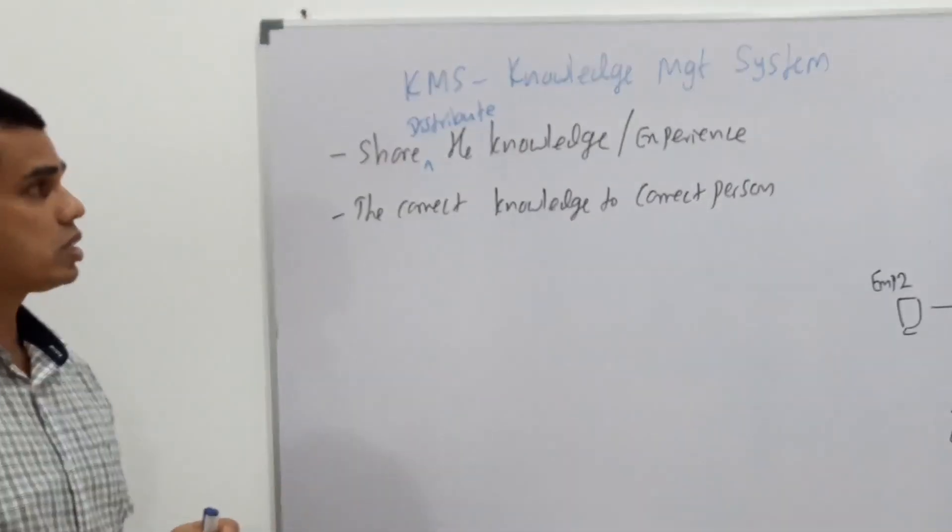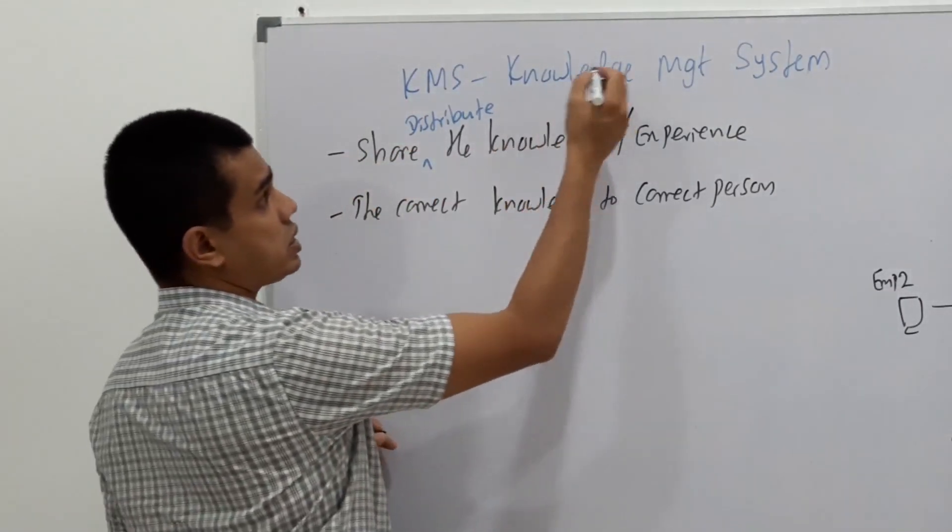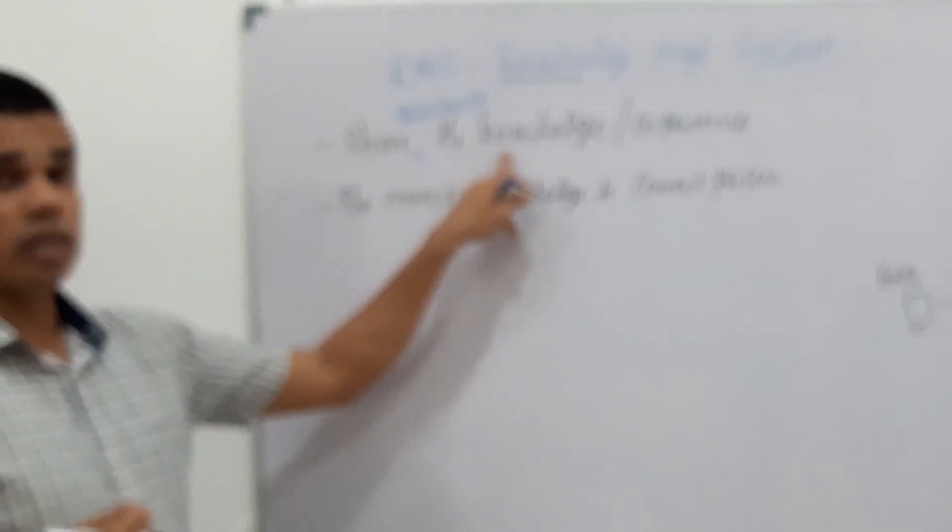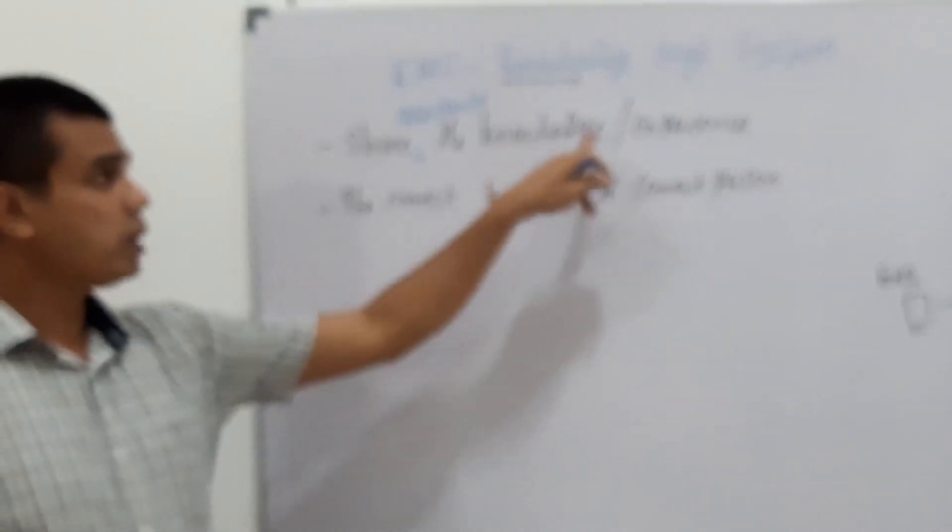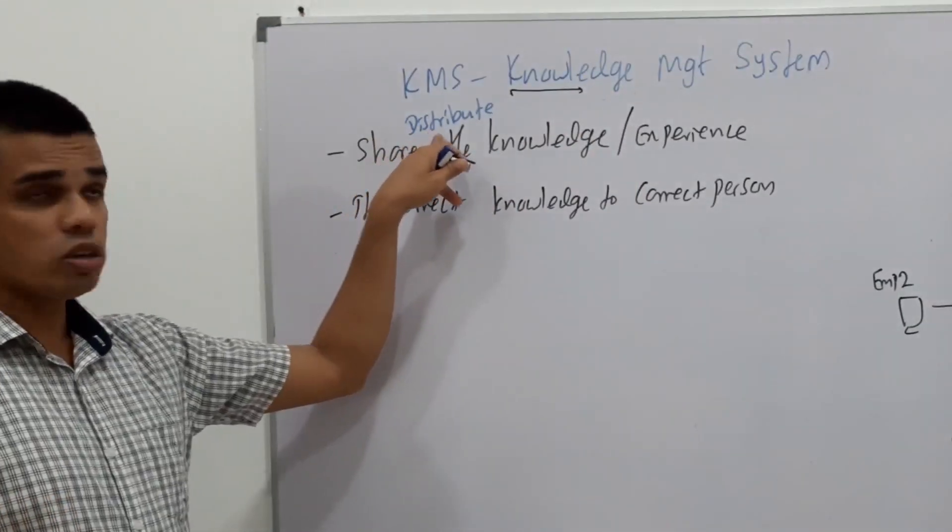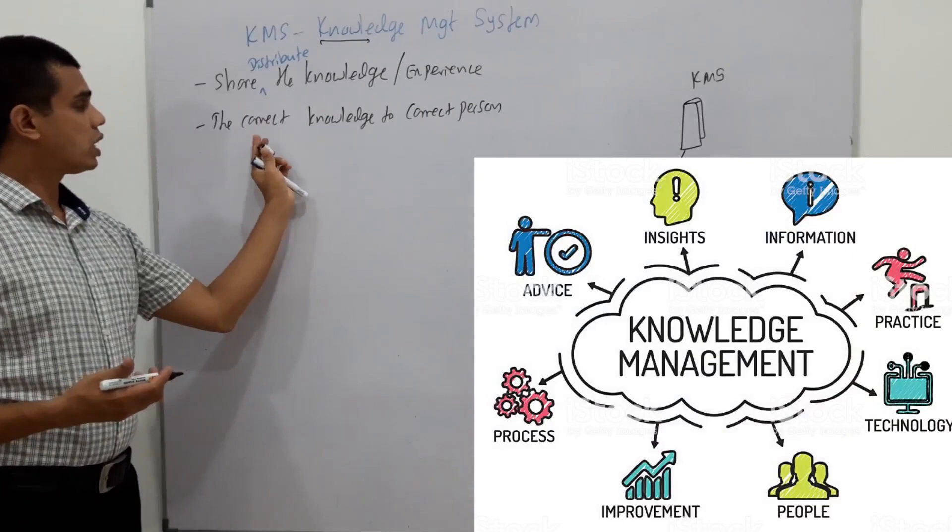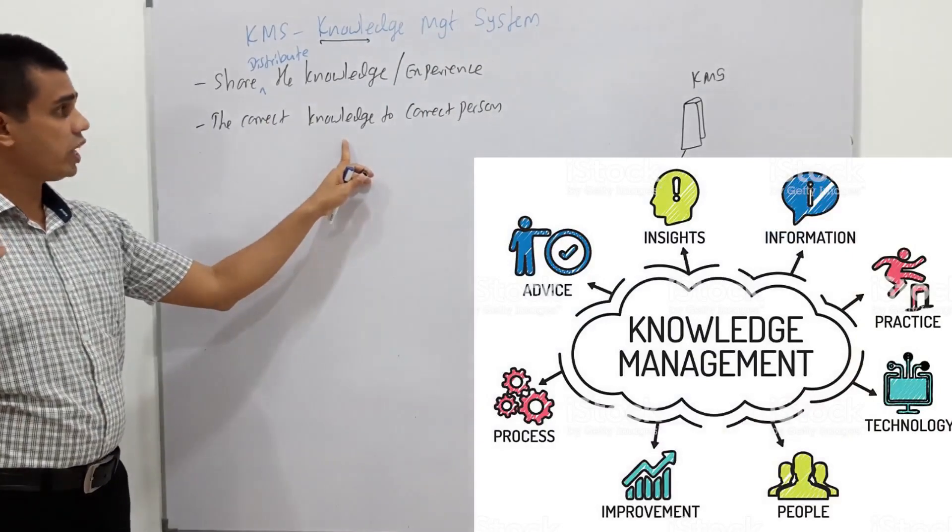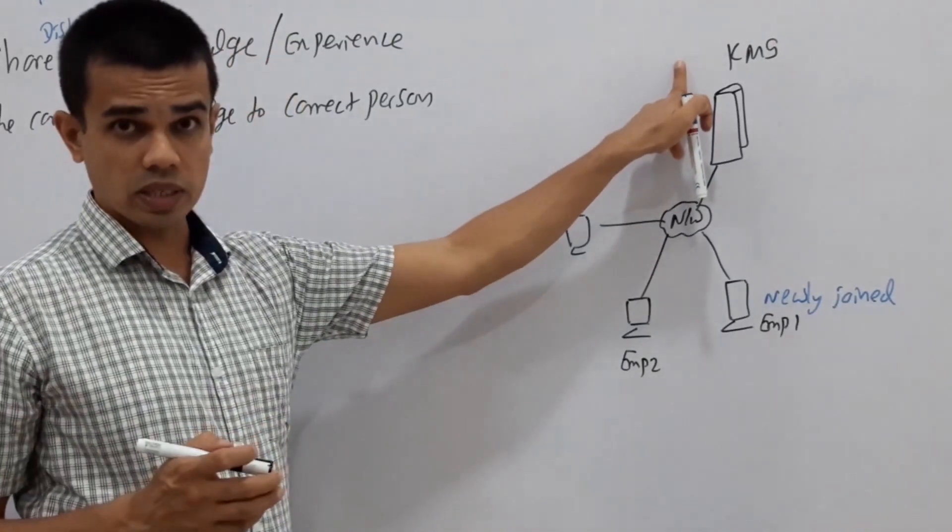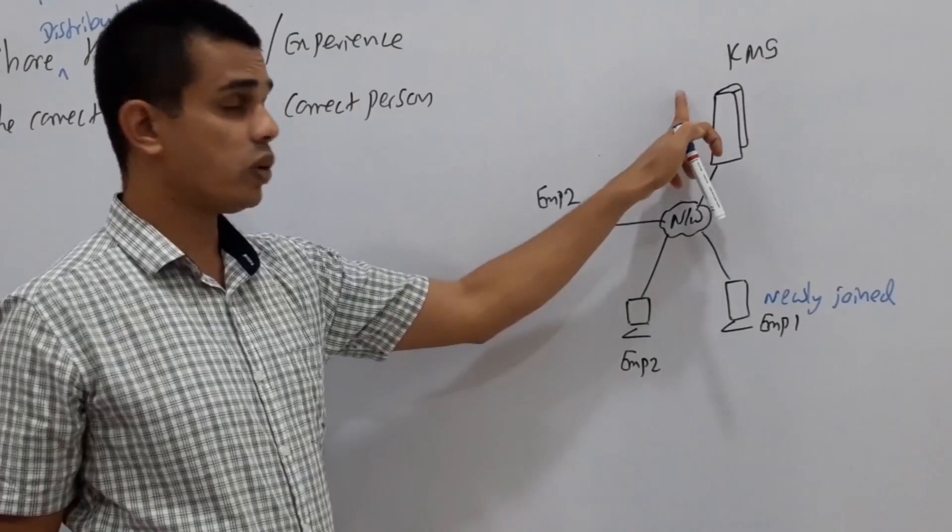This system is mostly suitable for enterprises or companies. This is a system to manage knowledge. What is knowledge? Sometimes it may be the idea you have, it may be one of your experiences. Those knowledges can be shared or distributed with the help of KMS. This is giving you the correct knowledge to the expected person.